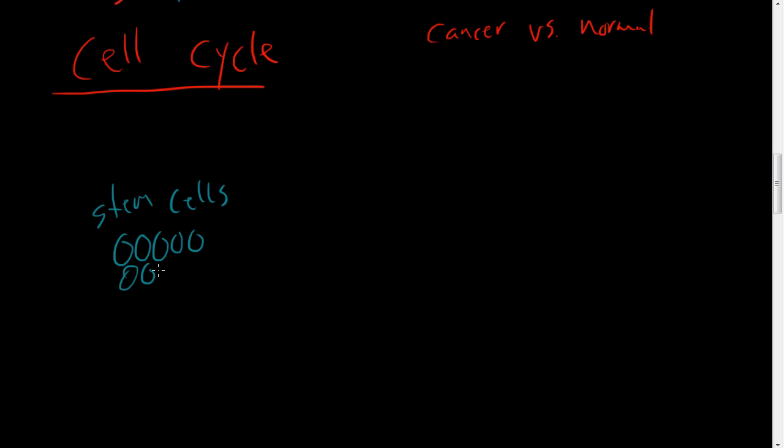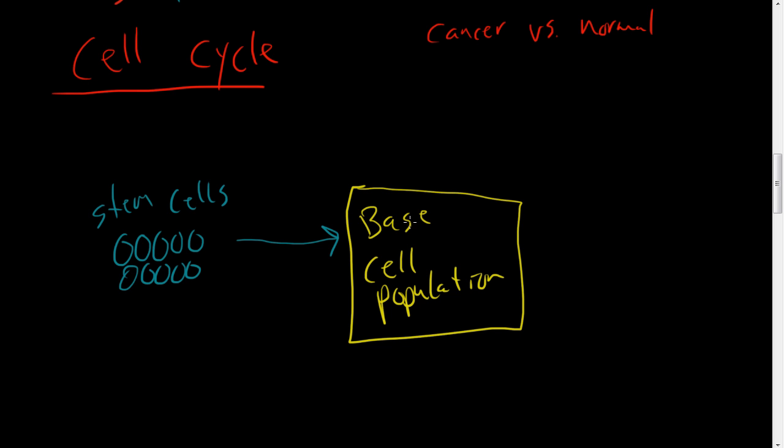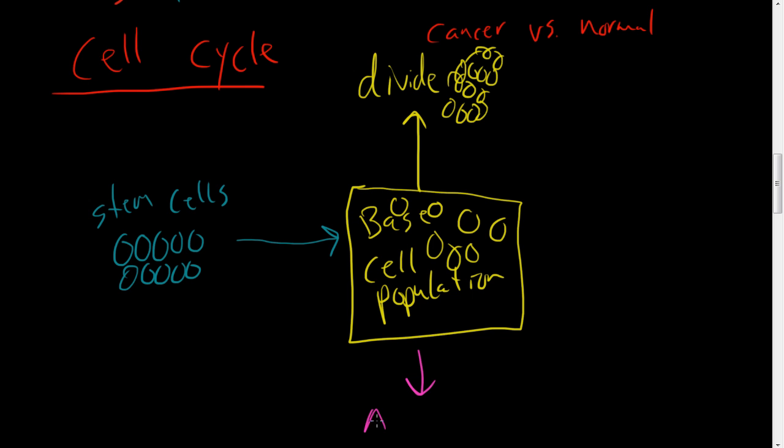And there's stem cells. These stem cells here are a certain type of cell and then they form, these stem cells turn into kind of this base cell population. And this, you have this base cell population here. And these are just normal cells, a group of cells. And they can divide so you have a lot more of them. Or they can undergo apoptosis. And they can also regenerate.